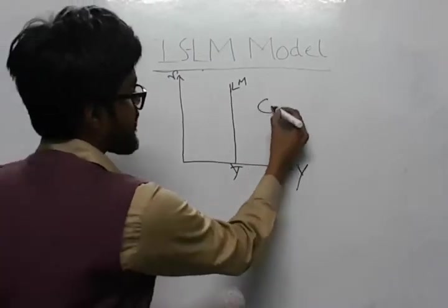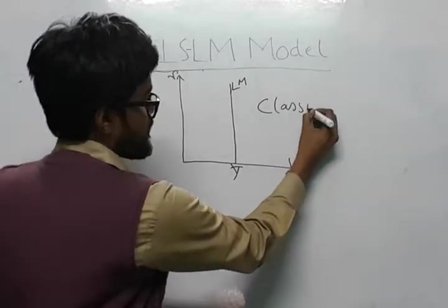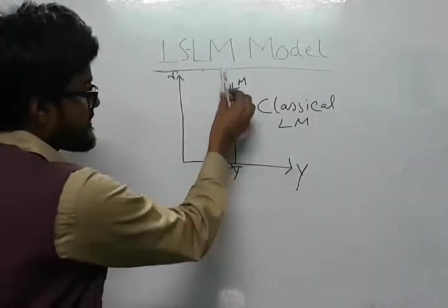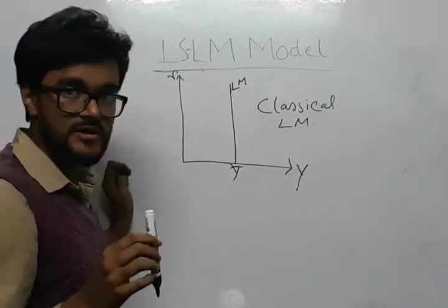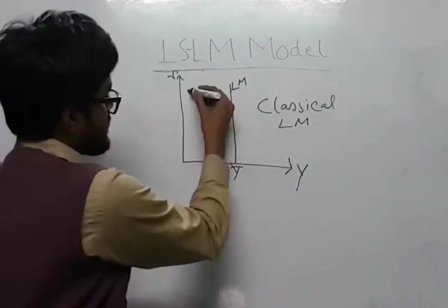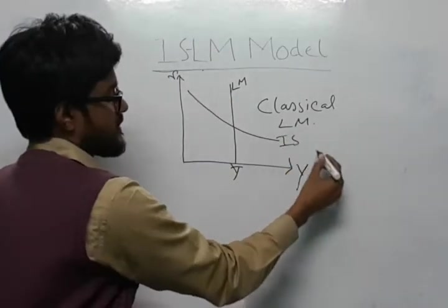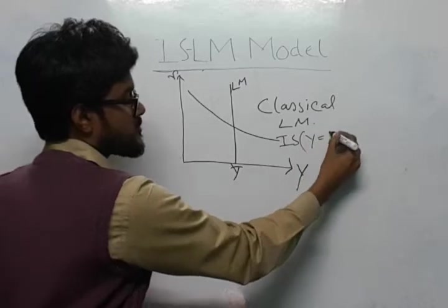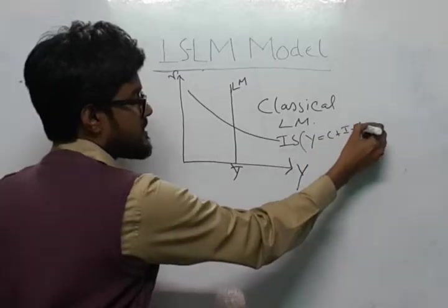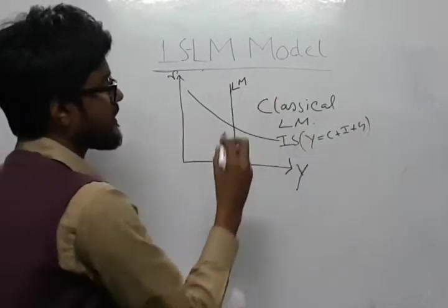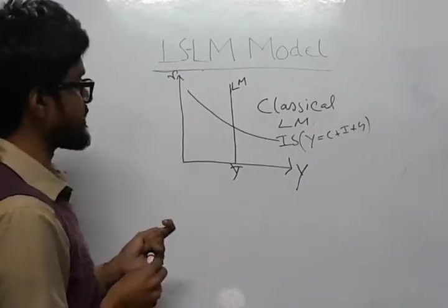So, in case of classical economics, this is known as classical LM. The LM curve is given by this and the IS curve is similar that is IS which equals Y equals C plus I plus G. This is the IS curve and this is the LM curve in case of classical economics.